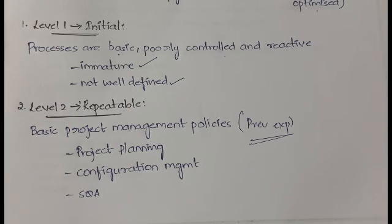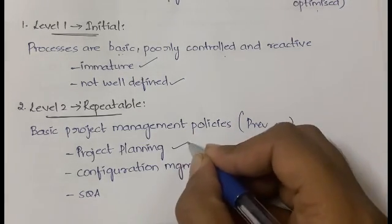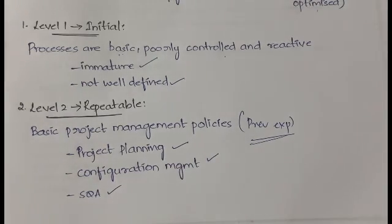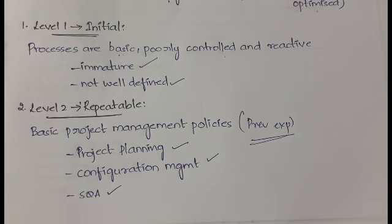At Level 2, project planning is done, configuration management of the project is done — meaning what capabilities and configurations are required — and software quality assurance is also done. So in the Repeatable phase, implementation of basic project management policies takes place.